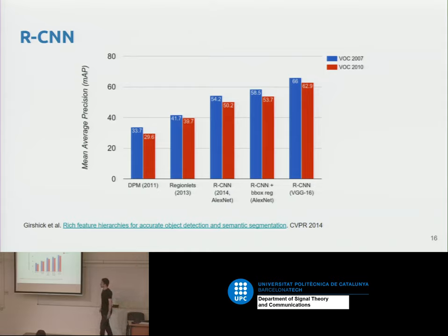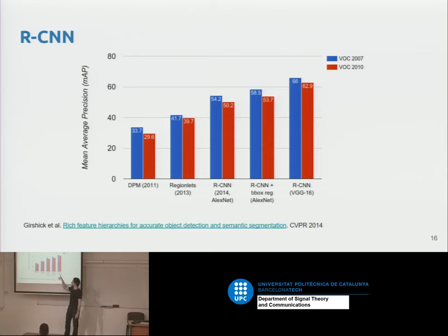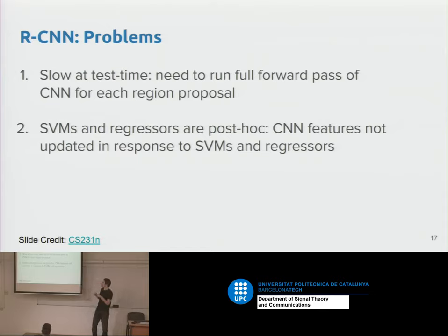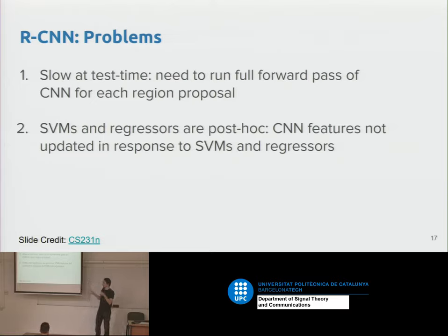RCNN beat everyone else — the prior methods didn't use deep neural networks. But the problems it had: slow test time because for every region proposal you have to do a full network inference, and the SVM does not allow backpropagation, so the weights of the network are fixed and not updated with the results.